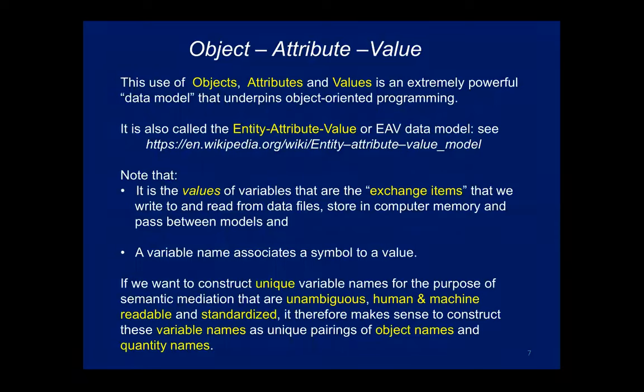In computational settings we're mostly exchanging numerical attributes. So we have the object, we have an attribute which is usually a quantity, and then the values are the actual numbers assigned to that pair. You have this triple — sometimes called entity-attribute-value — where the values are stored on the hard drive or in the data file. But we need the entity and the attribute to construct a name that will uniquely refer to that variable of interest.